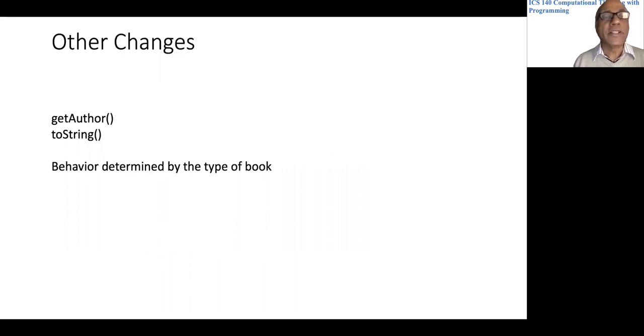There should be other changes. getAuthor should not return an author for a periodical. toString should not put the author field in the string that is returned.